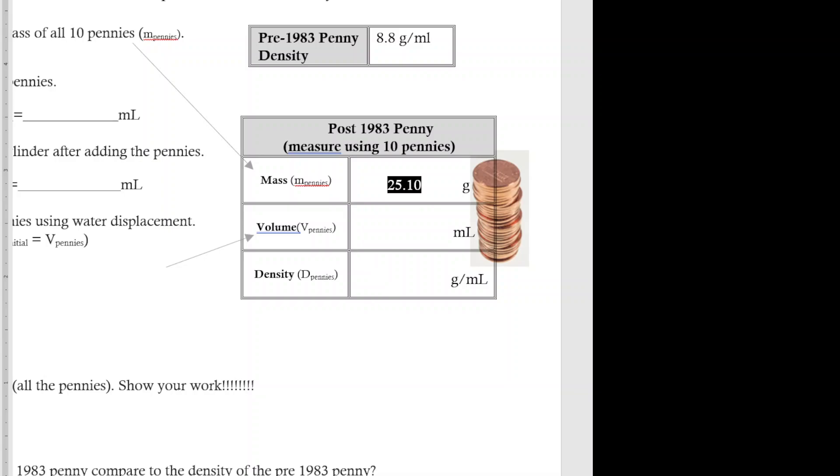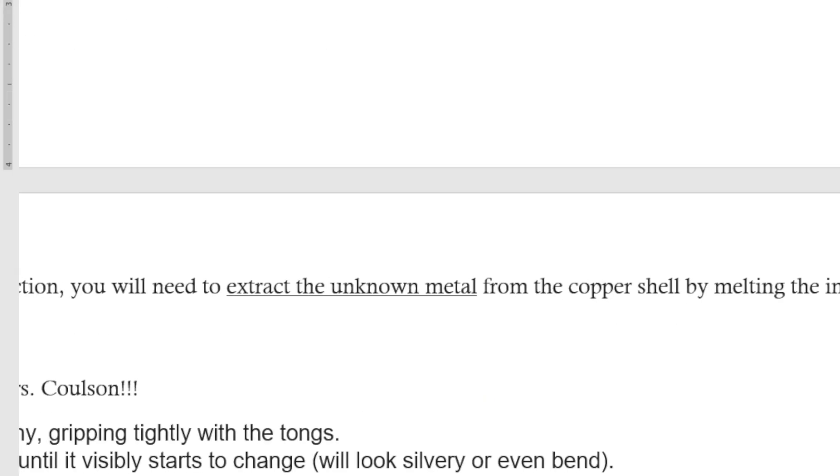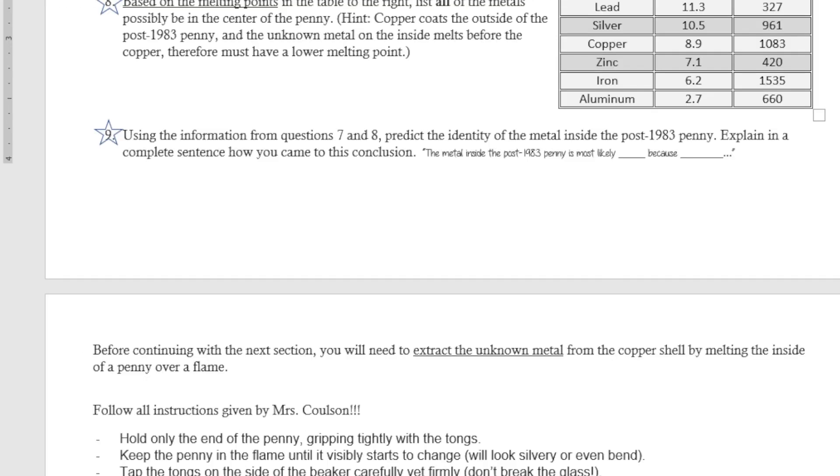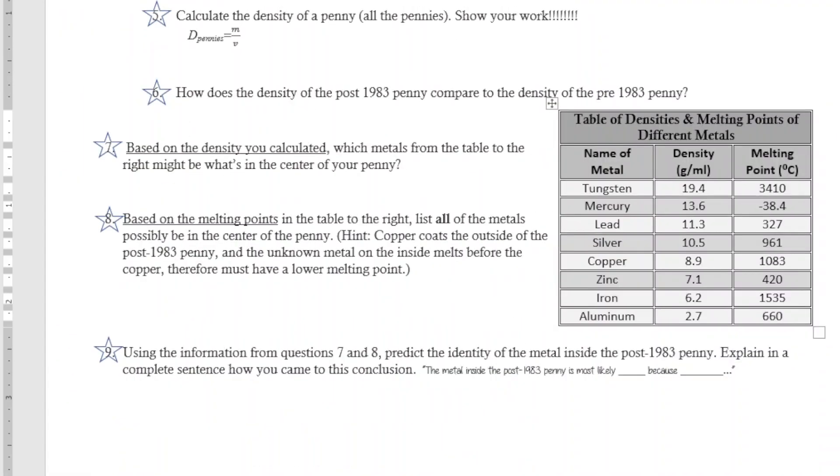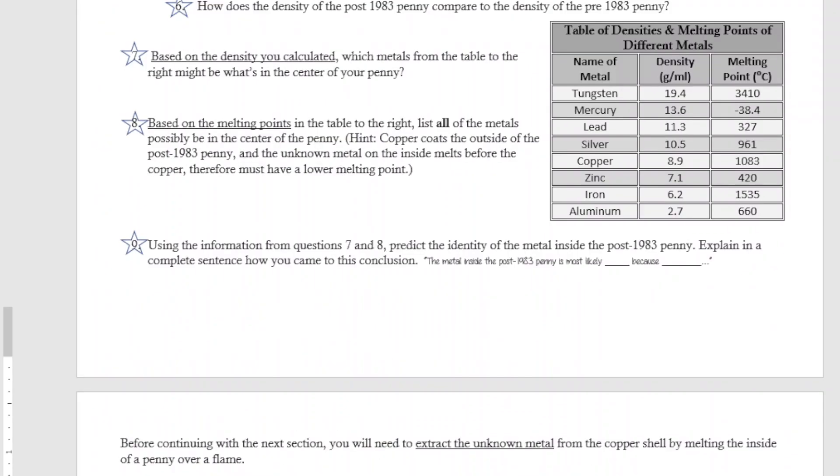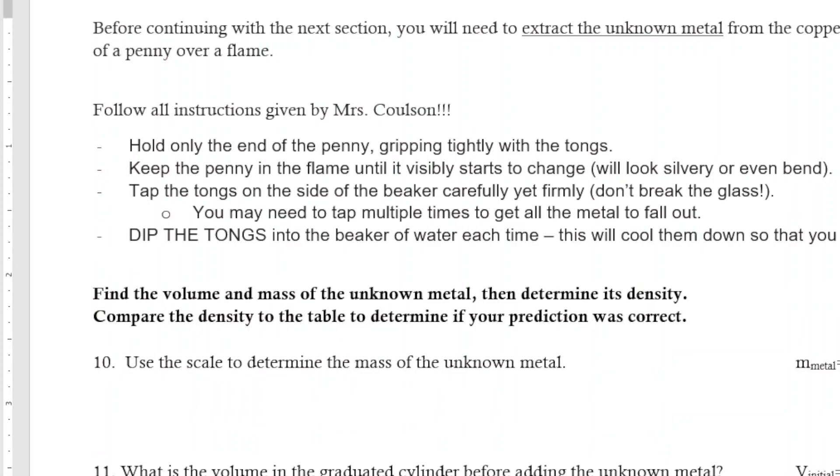We'll go back to our lab picture. On the back page of the lab—number 10 says use the scale to determine the mass of the unknown metal. With that, our unknown metal weighed 12.76 grams, so 12.76 was the mass of our unknown metal for number 10.